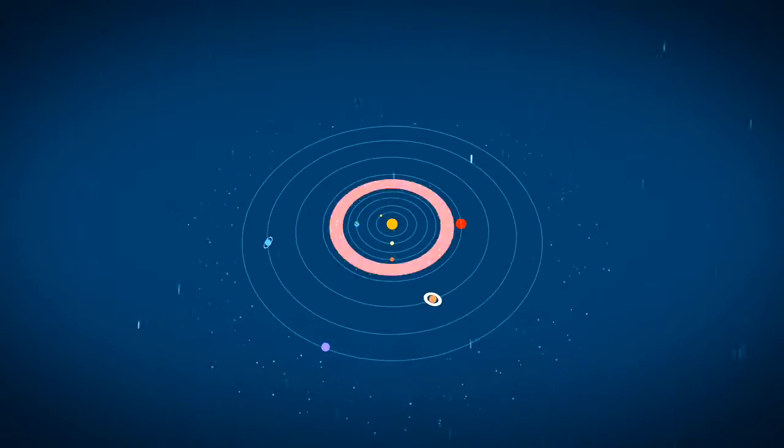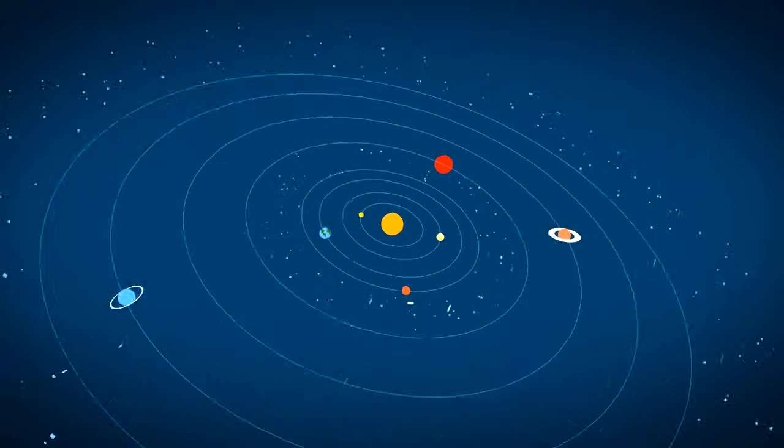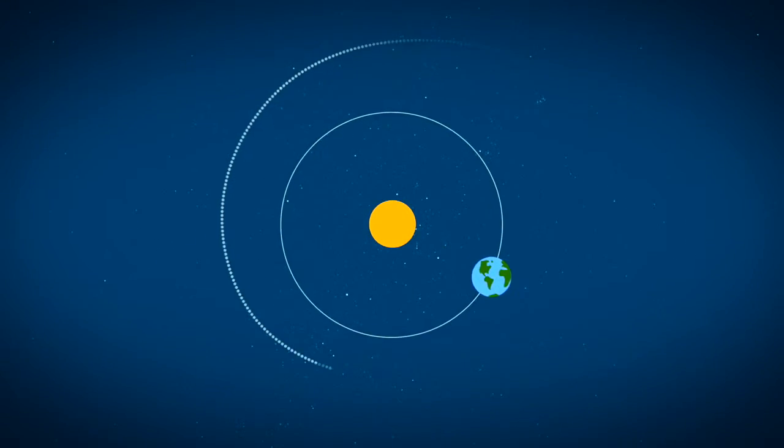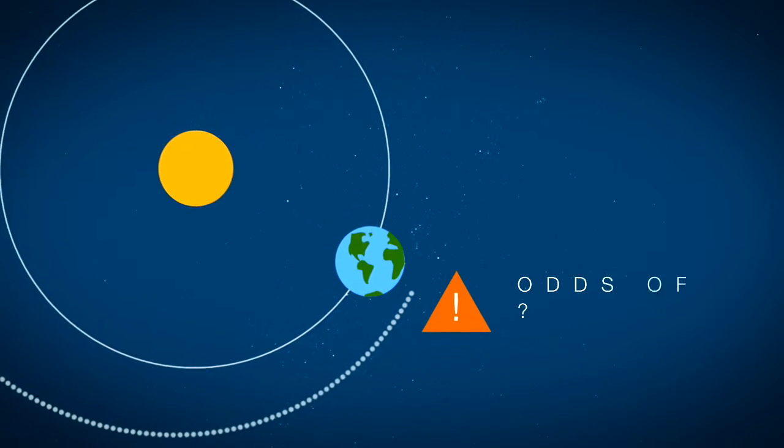Most other asteroids tend to stay grouped together in a few regions of our solar system, yet some still end up in our backyard. So once these asteroids get close, what makes the difference between a near-miss and a potential hit?